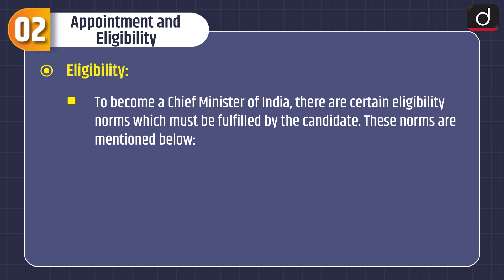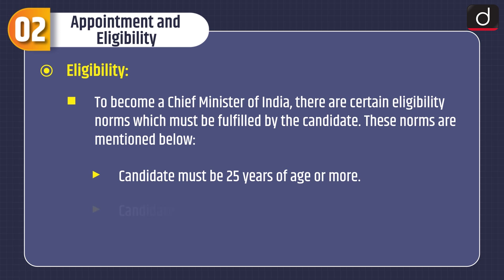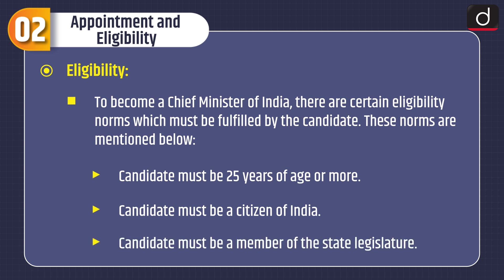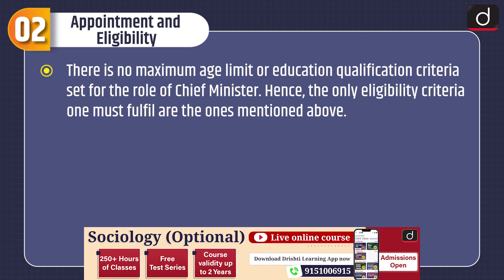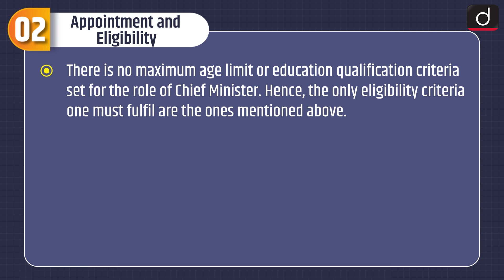Regarding eligibility, to become a Chief Minister of India, certain eligibility norms must be fulfilled. The candidate must be 25 years of age or more, must be a citizen of India, and must be a member of the state legislature. There is no maximum age limit or education qualification criteria set for the role of Chief Minister; hence these are the only eligibility criteria one must fulfill.